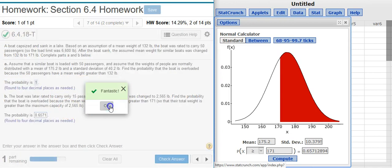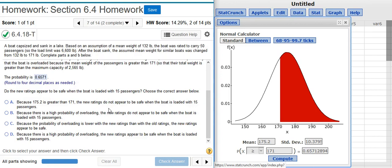Fantastic! Now, the last part of the problem asks, do the new ratings appear to be safe when the boat is loaded with 15 passengers? Well, the probability the boat's going to be overloaded is almost two-thirds. That's a sizable proportion. That's no small number.